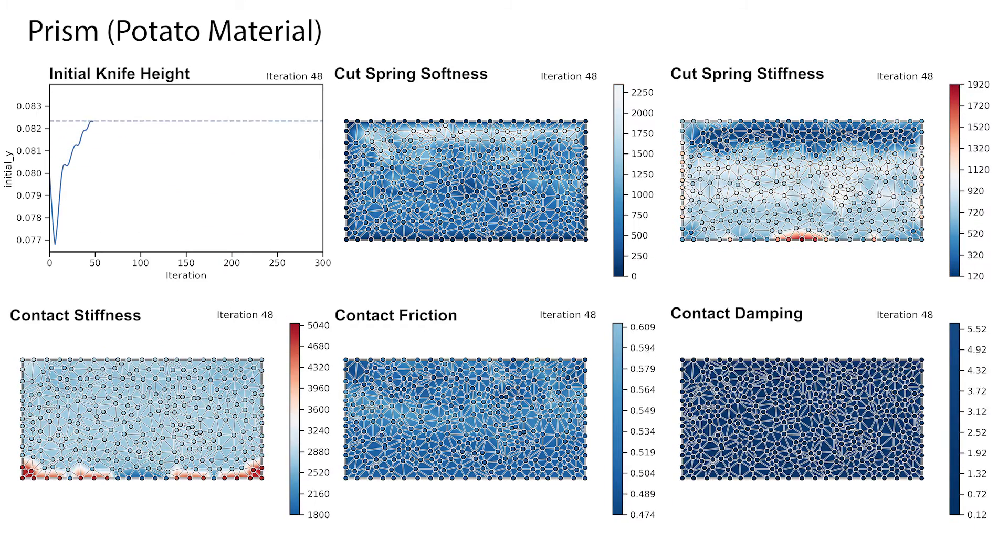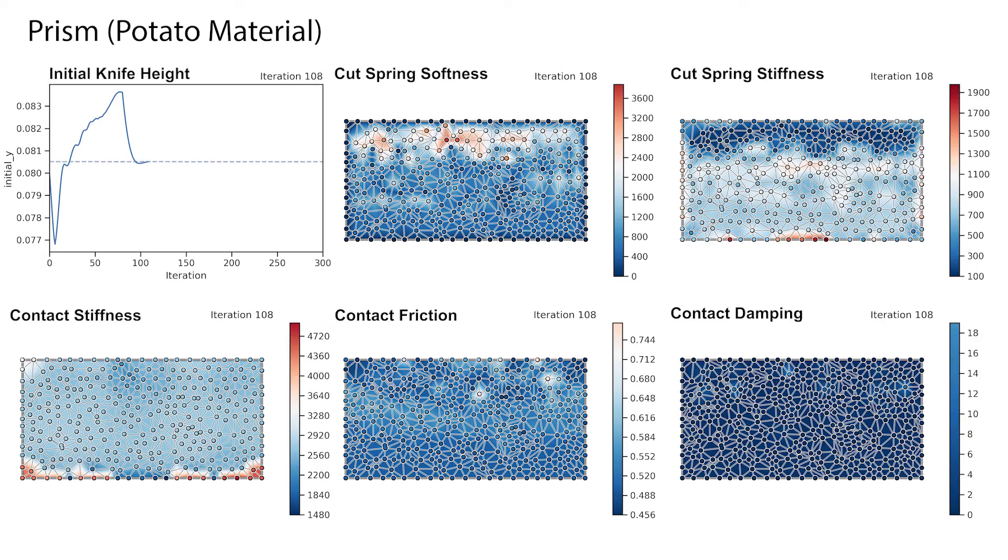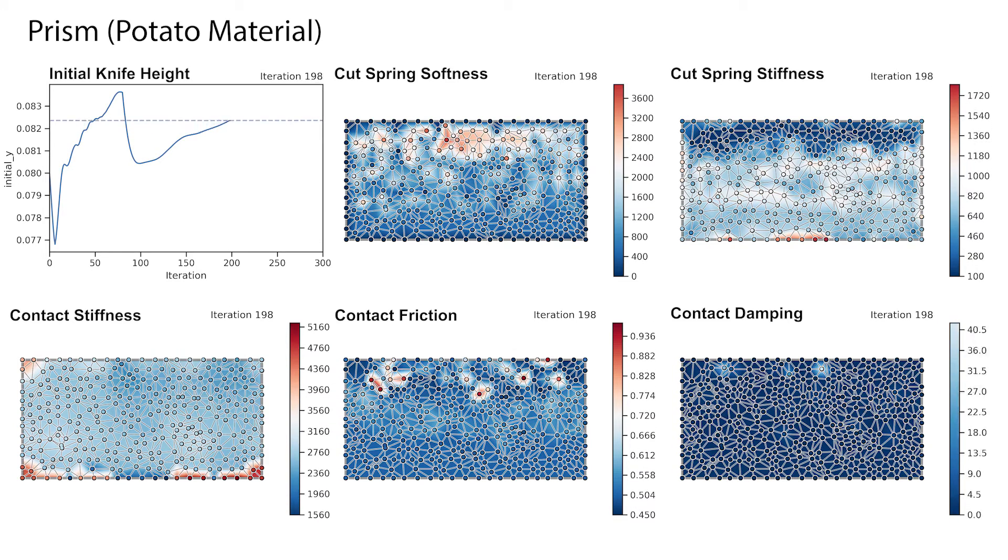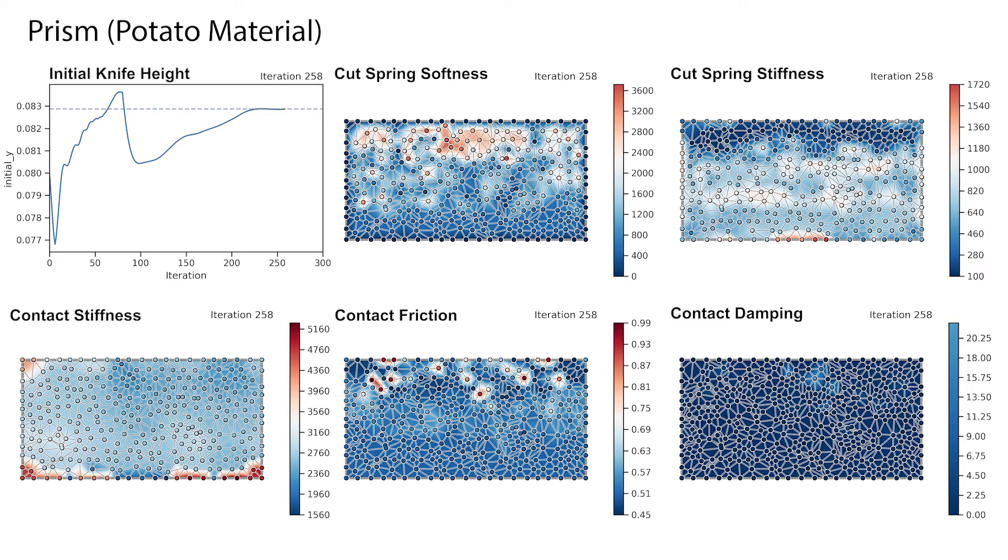Here, we visualize the evolution of the simulation parameters, which are tuned for each cutting spring independently, except for the initial height of the knife, shown in the top-left diagram.